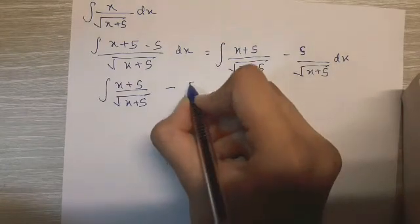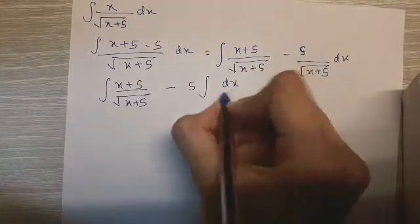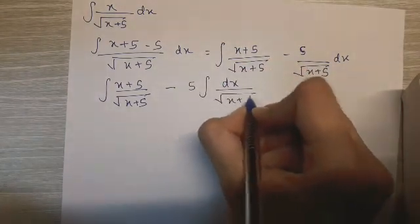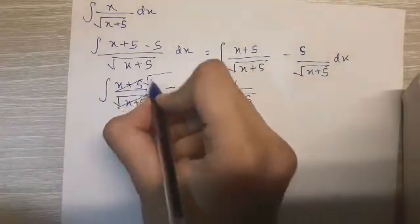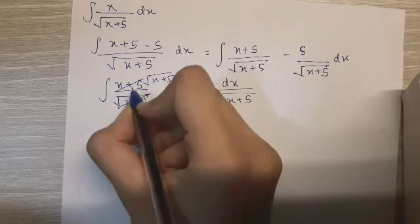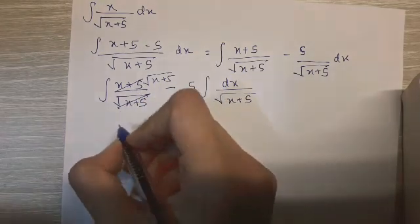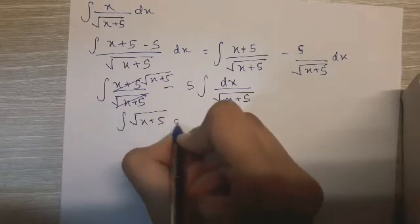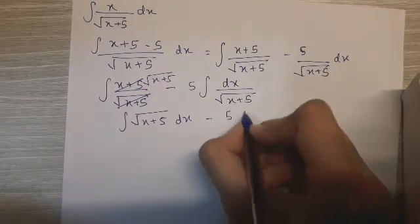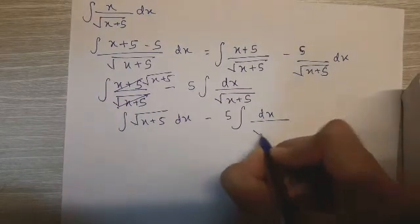So this can be canceled and we can take the numerator as root x plus 5, because obviously the numerator is the square of the denominator. So we have root x plus 5 dx minus 5 upon root x plus 5.